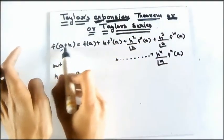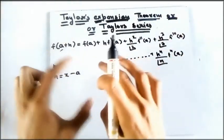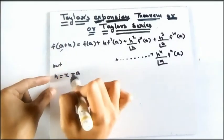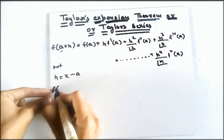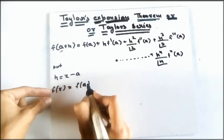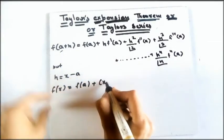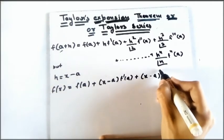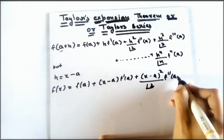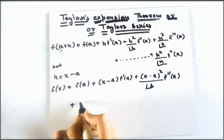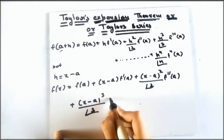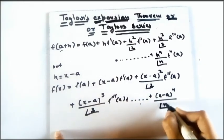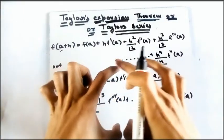The last type is expansion in ascending powers of (x − a). If you put h = x − a into the Taylor series, then f(x) = f(a) + (x − a)·f'(a) + (x − a)²/2!·f''(a) + ... + (x − a)ⁿ/n!·fⁿ(a). The powers are ascending: one, two, three, up to n.